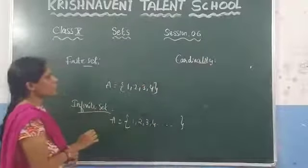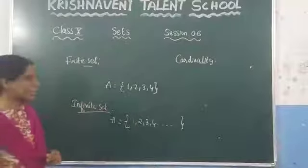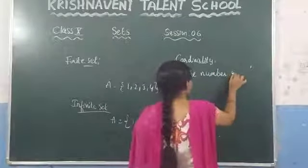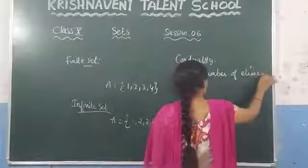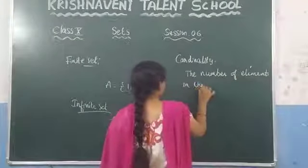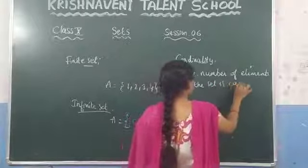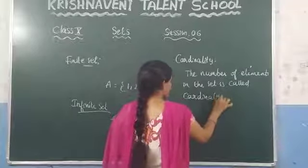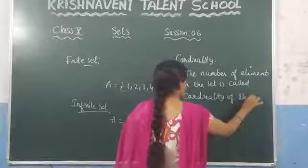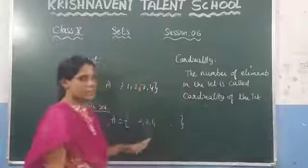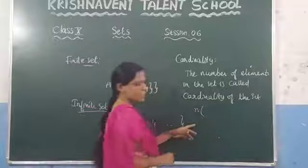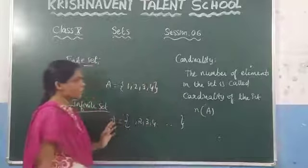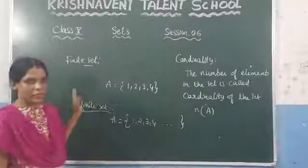What is meant by cardinality? It is nothing but the number of elements in the set — we call it the cardinality of the set. The cardinality of a set is denoted by the symbol N of A, N of B, or N of any set.